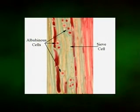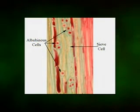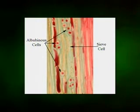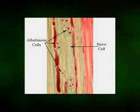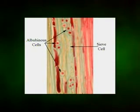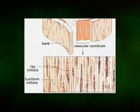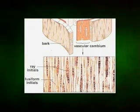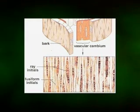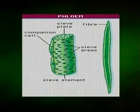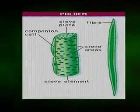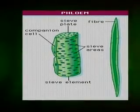In conifers, cells similar in function to the companion cells of angiosperms differ both in origin and morphology. These cells, called albuminous cells in the older literature, have in recent years been widely labeled Strasburger cells, after the German botanist who first described them. They are derived largely from marginal ray cell initials as well as from some short fusiform initials and generally are shorter than companion cells. Axial parenchyma cells, usually associated with strands of conducting cells in angiosperms, are often difficult to distinguish from companion cells.